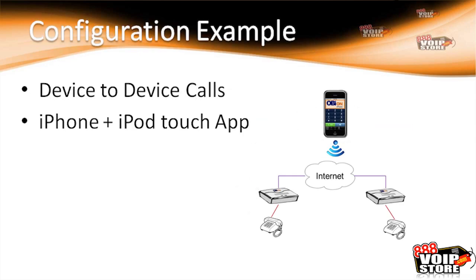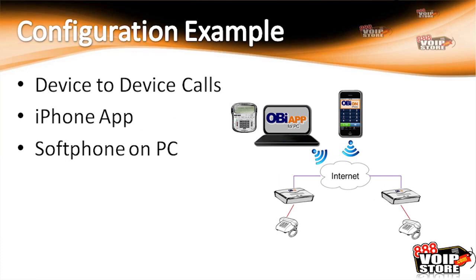The next step up from that is to integrate services like the iPhone or iPod Touch app, and then the Android app coming soon. It can now act as a node and call these different devices as well. Moving up from that, there's also an app for the PC, so you can do device-to-device calls, calling to the apps on smartphones and to the other OBi devices.